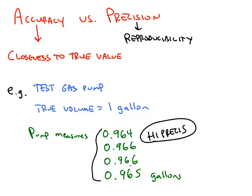The accuracy, though, depends on what your standards are. If you're buying a gallon of gas and the pump shortchanges you by 4%, that's not very close to the true value in this case. We expect a gas pump to be more accurate than that. So this would be high precision but low accuracy.